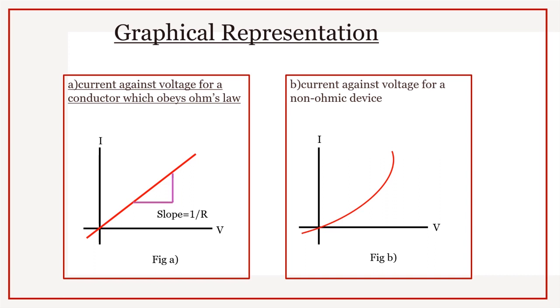Materials such as semiconductors, we are going to learn in unit 9, they do not follow Ohm's law. As potential increases, current does not increase steadily. They are known as non-ohmic materials.